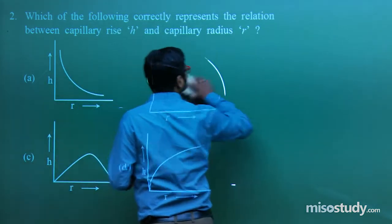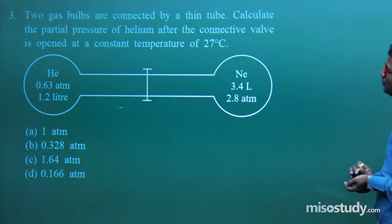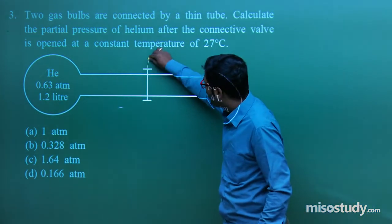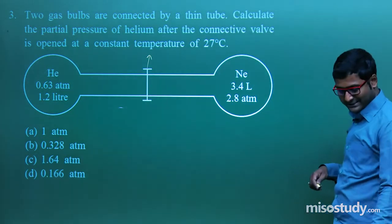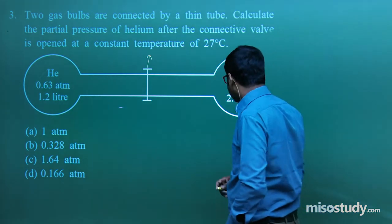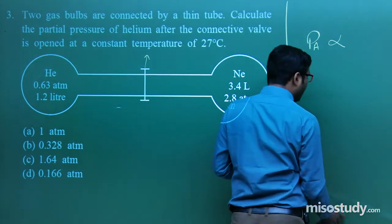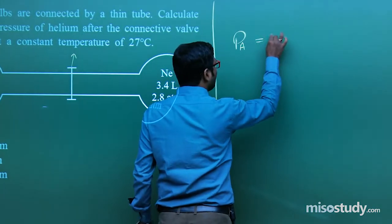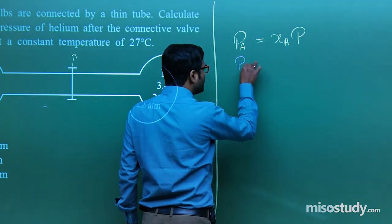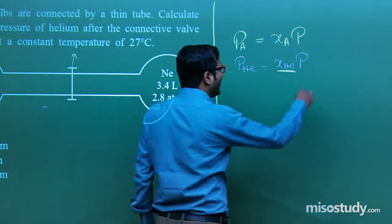Now question number 3. Two gas bulbs are connected by a thin tube. Calculate the partial pressure of helium after the connecting valve is opened at a constant temperature of 27°C. As we know, the partial pressure of any gas A equals the mole fraction of A multiplied by total pressure. We have to find the partial pressure of helium: X(He) × P_total.